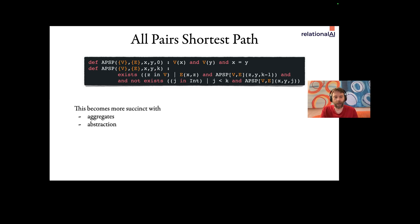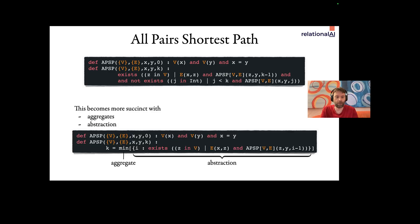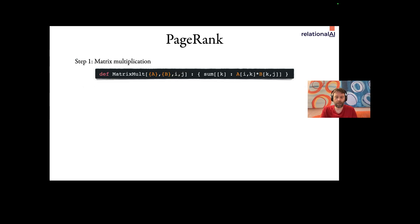And if you want, you can write this code more succinctly using aggregation and abstraction. So here, this second rule, first rule is the same. The second rule says that the shortest path length from x to y is the minimum value i such that there is this out neighbor z of x that has this path of length i minus 1 to y, like in the previous slide.